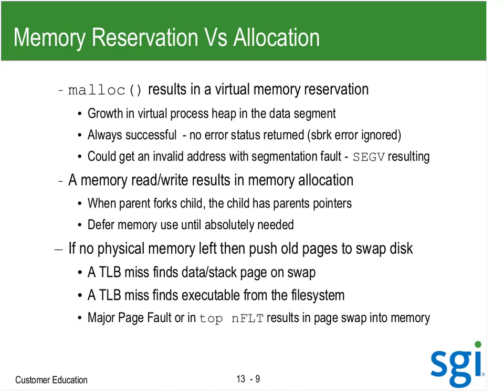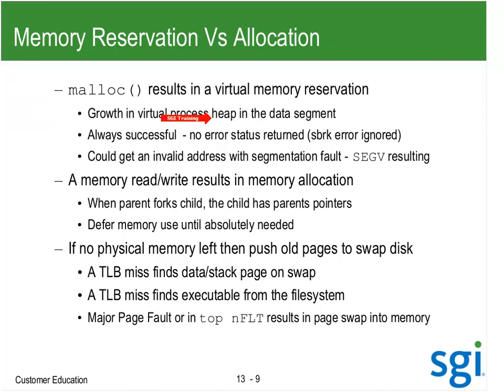With demand paging, a malloc results in a virtual memory reservation. When I ask for memory, malloc goes and falls to a system call named sbreak. sbreak will go to the page table and look for the address. If the address doesn't exist, it's reserving. Then when we touch it, we get an address back of where the actual physical address is. But when I first do a malloc, it is a virtual address that may not exist yet. The malloc is a growth in the process heap in the data segment.